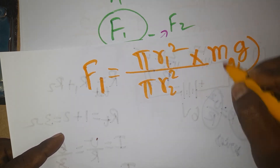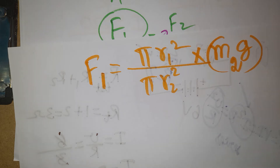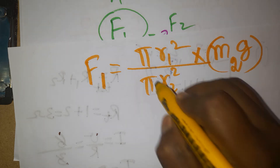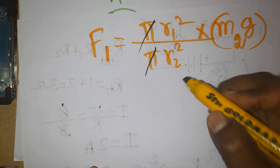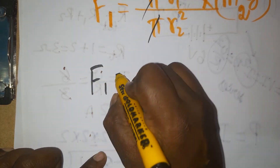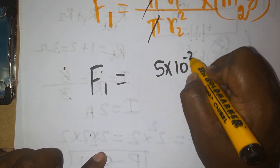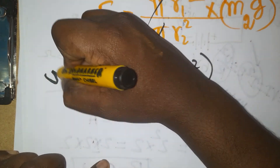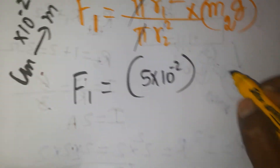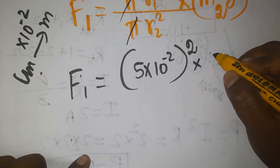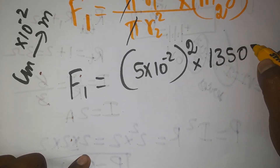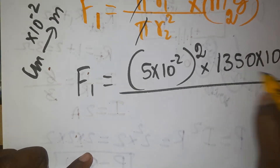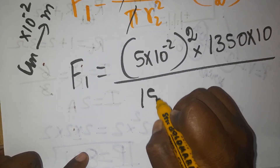Force 2 equals Mass 2 times gravity. Pi cancels out from numerator and denominator. Radius 1 is the smaller radius, 5 centimeters = 5 × 10⁻² meters. The mass M2 is 1350 kg, and gravity g can be taken as 10 or 9.8. Radius 2 is the bigger radius, 15 centimeters = 15 × 10⁻² meters.